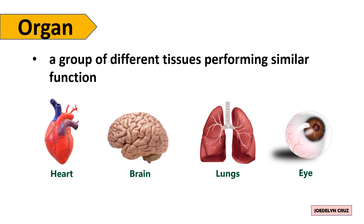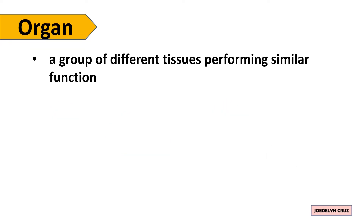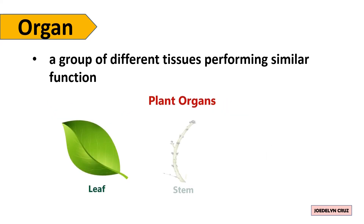On the other hand, examples of plant organs are leaf, stem, and roots.